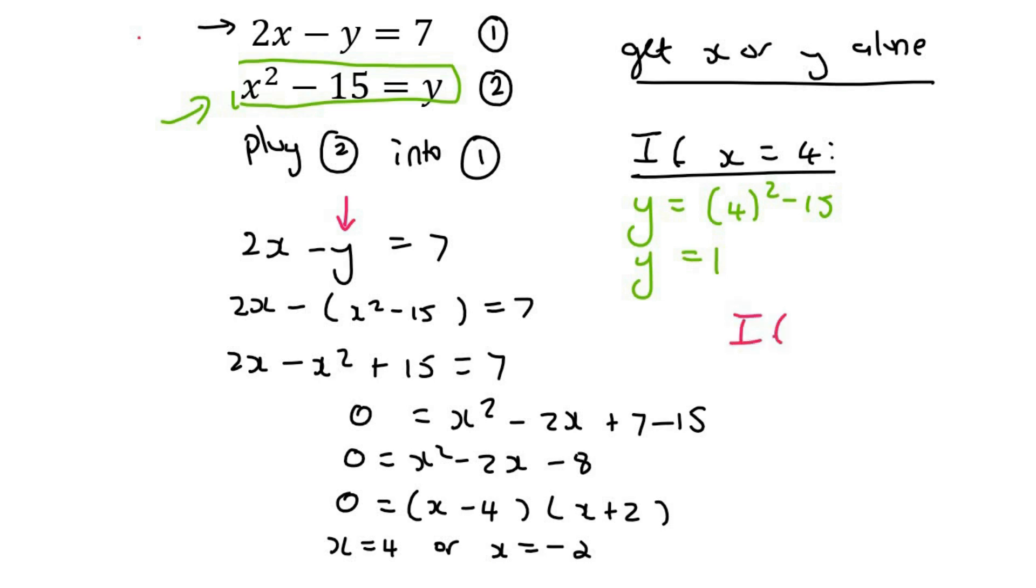In a different color, if x equals negative 2, then you plug it into the same equation. Then y would be negative 2 squared minus 15, and so that would be negative 11.